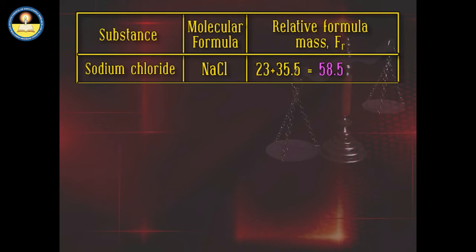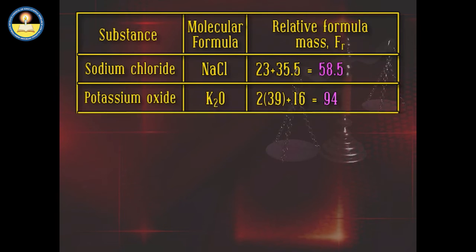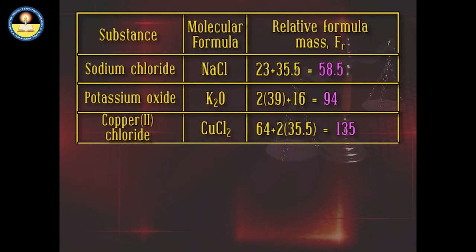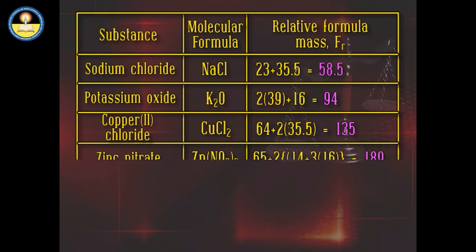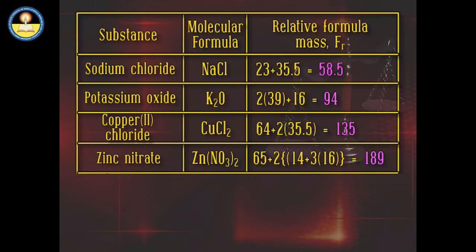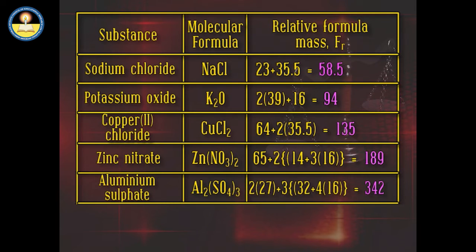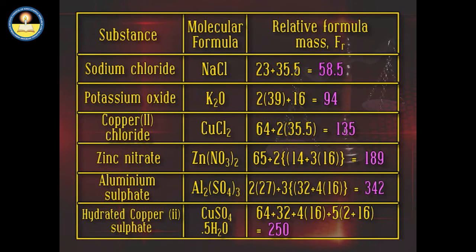Here are the relative formula masses of some ionic compounds: sodium chloride — 58.5; potassium oxide — 94; copper chloride — 135; zinc nitrate — 189; aluminium sulphate — 342; hydrated copper sulphate — 250.